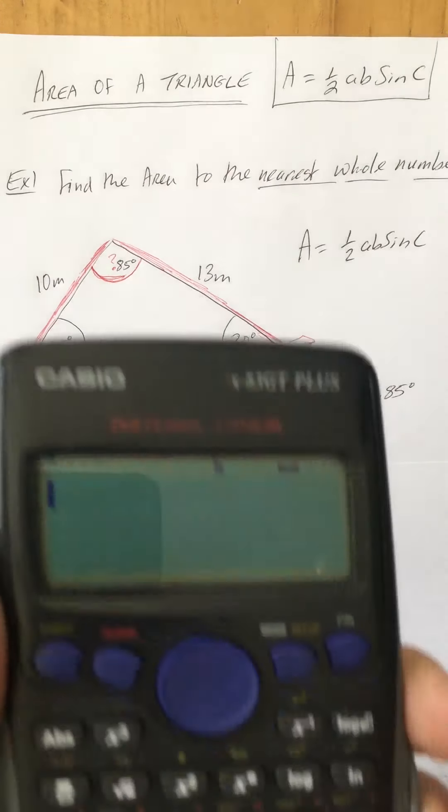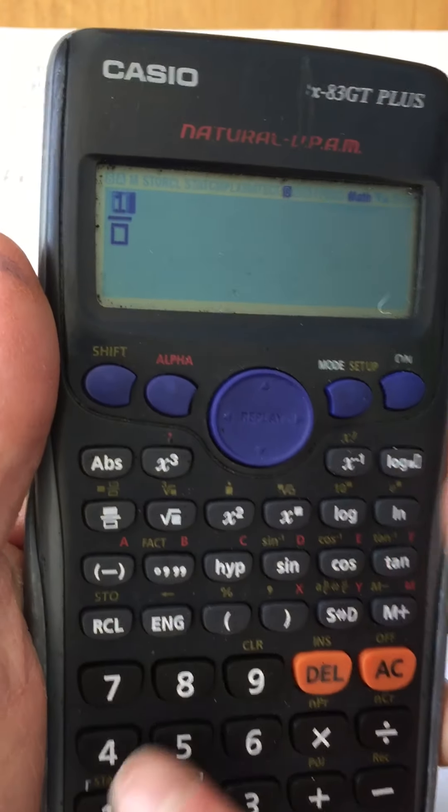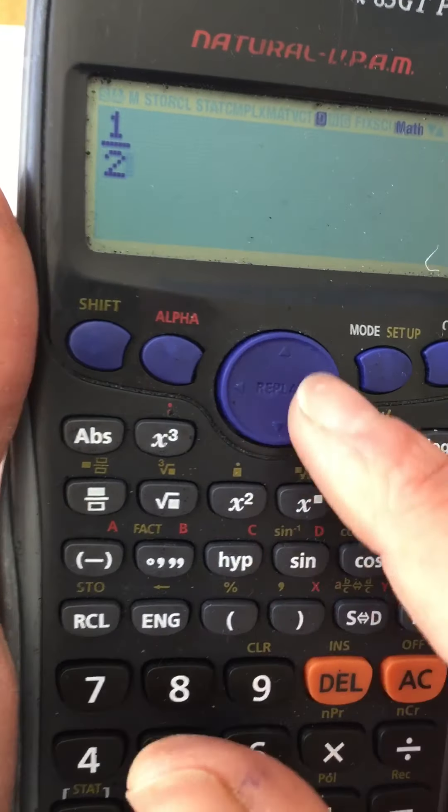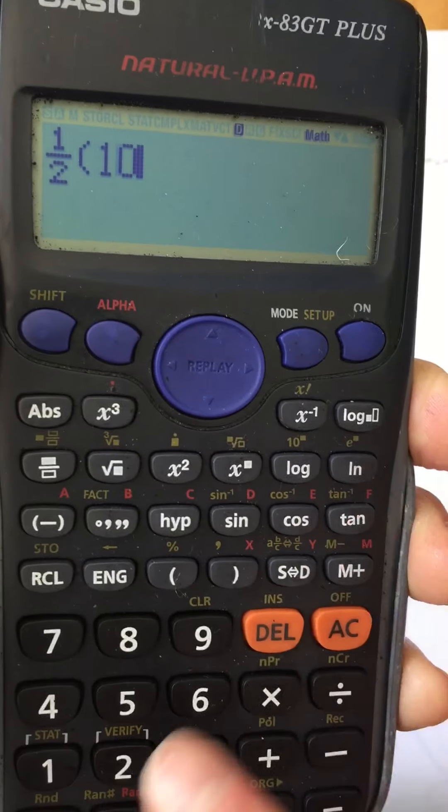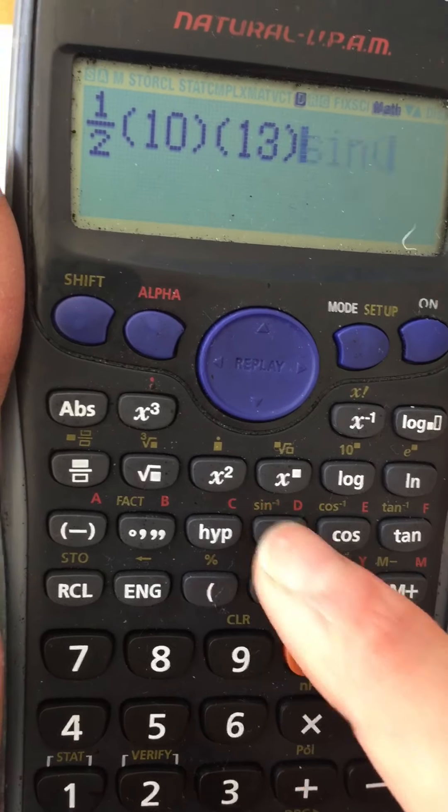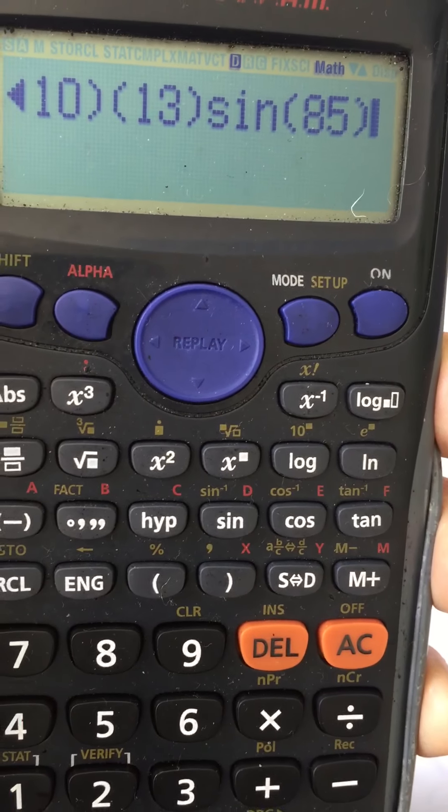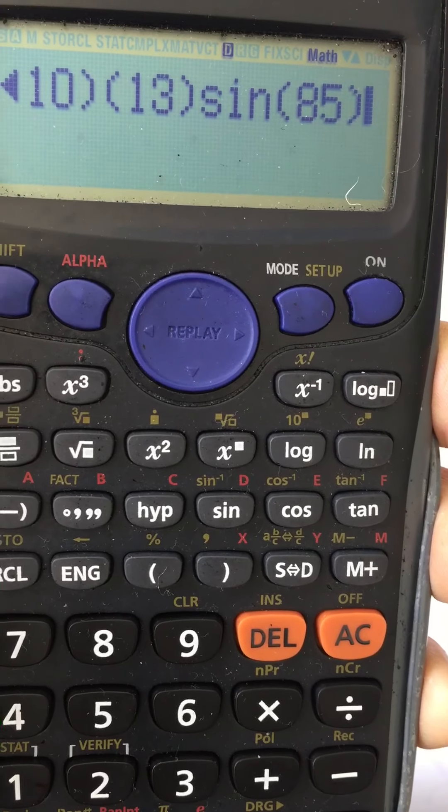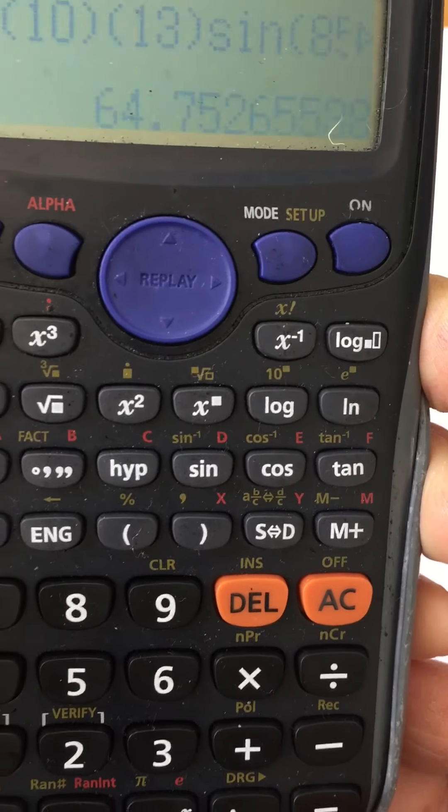So a half is 0.5, or if you prefer you can write one half, multiplied by 10 multiplied by 13 multiplied by the sine of 85 degrees. And in this formula, for the area formula, it's always sine that is used because it's in the formula. Sine 85, and then that works out to be 64.75.